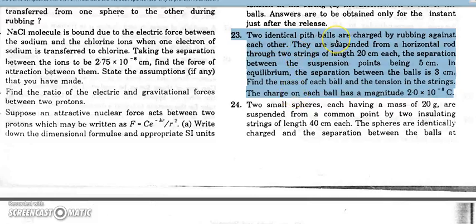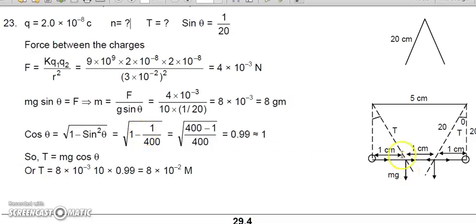In the next question, two identical balls are rubbed against each other and suspended from strings of length 20 centimeters. The points of suspension are separated by 5 centimeters. Due to equal and opposite charges they attract, and the final separation between the balls becomes 3 centimeters. We need to find the mass and tension in the strings. Since the string length is large compared to the displacement, sin θ and tan θ are approximately equal — both approximately 1/20.